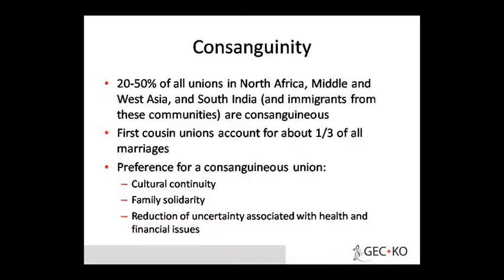Why is consanguinity preferred? There are several reasons. First, cultural continuity — marrying outside the culture means we don't know them, we don't accept them, so the culture will continue without problem. Second, family solidarity — if you know the families already, it is easy to adjust and build good relationships. Third, reduction of uncertainty associated with health and financial issues — when marrying within known relatives, there is very low uncertainty about how people will live or what they are like.